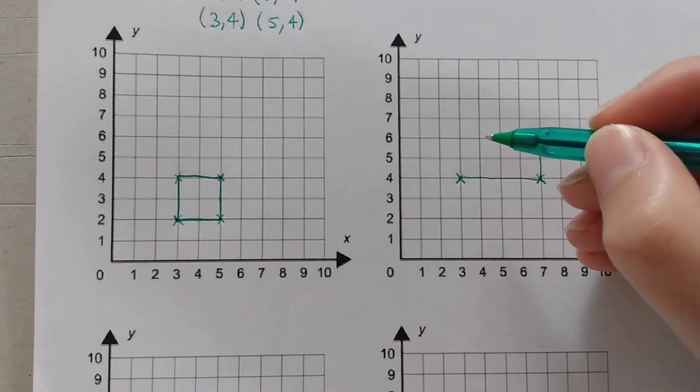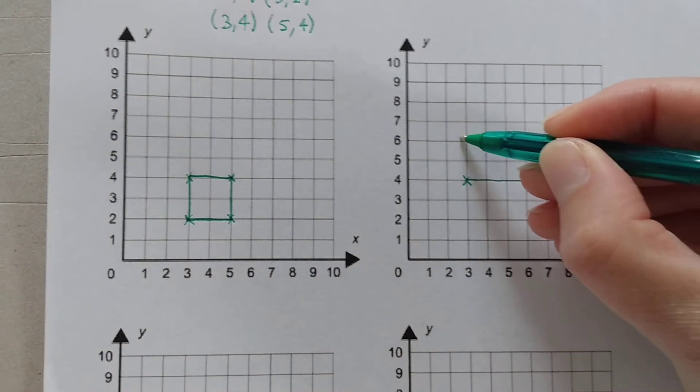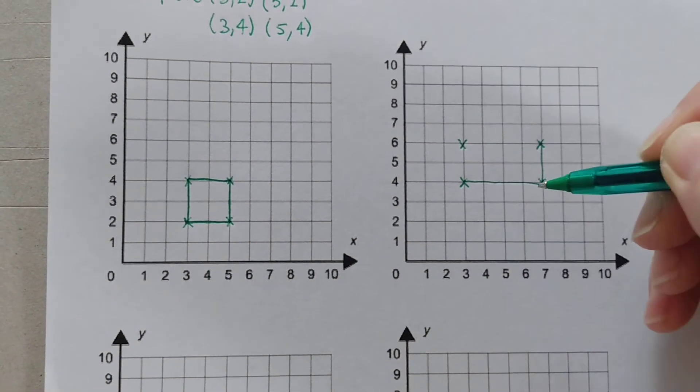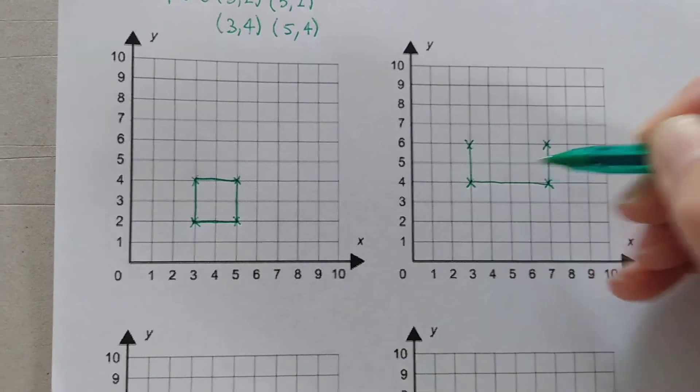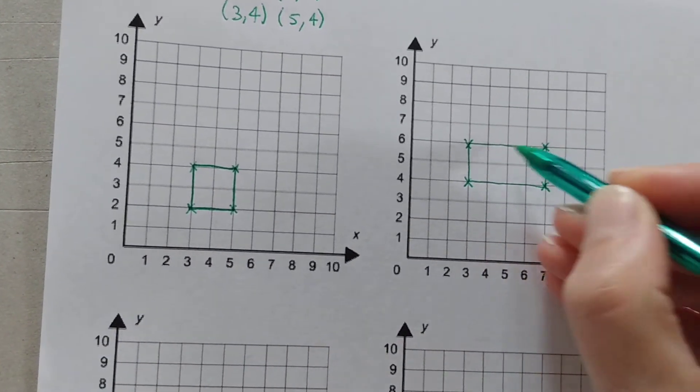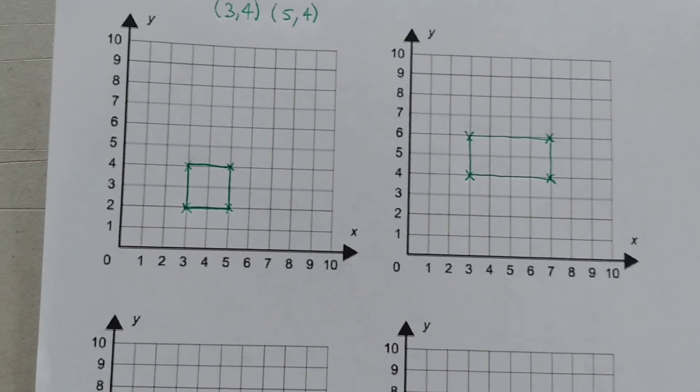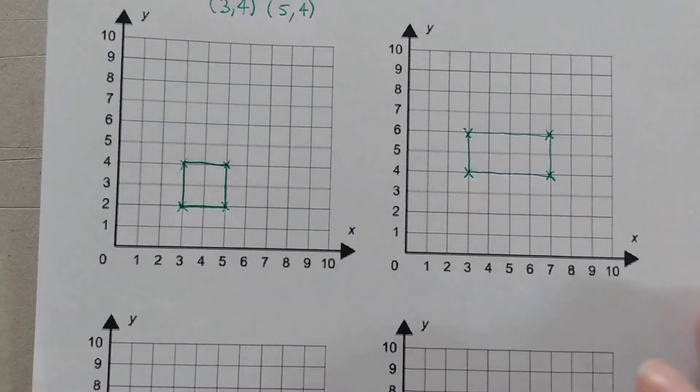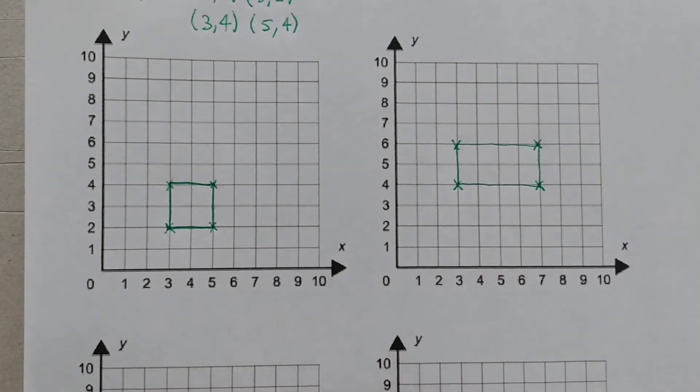So there can only be one choice for our last coordinate. And it's there. Now we've got those two equal sides. Those two equal sides. They're both parallel. They're both equal to each other.